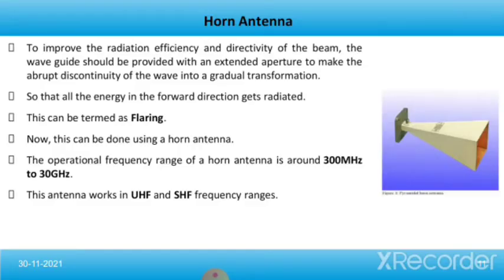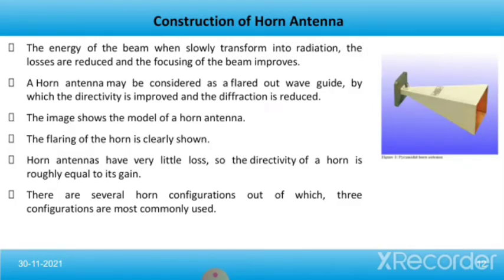Now let's move forward and talk about horn antenna. To improve the radiation efficiency and directivity of the beam, the waveguide should be provided with an extended aperture to make the abrupt discontinuity of the wave into a gradual transformation, so that all the energy in the forward direction gets radiated. This can be termed as flaring, and it can be done using a horn antenna. The operational frequency range of a horn antenna is around 300 MHz to 30 GHz, working in ultra-high frequency (UHF) and super-high frequency (SHF) ranges. A horn antenna may be considered as a flared-out waveguide by which directivity is improved and diffraction is reduced.